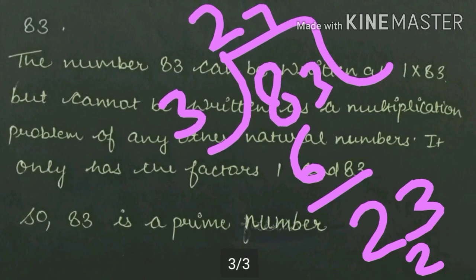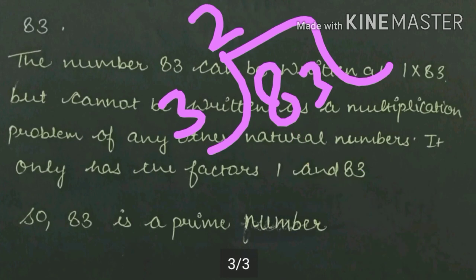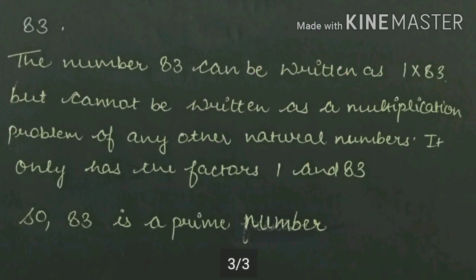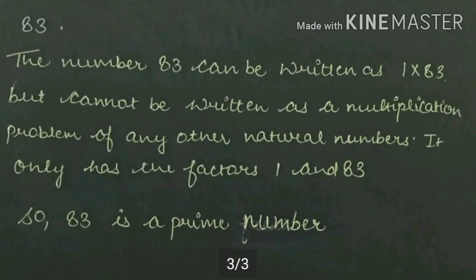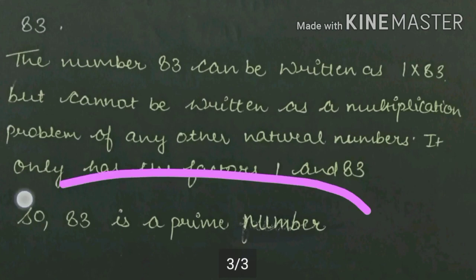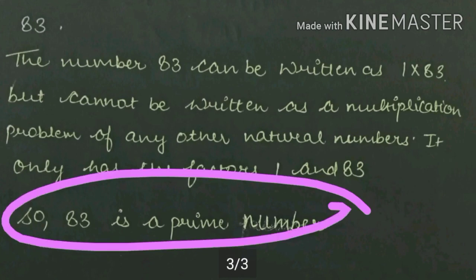3 is not a factor of 83. Factors are the numbers that divide evenly, so 83 is a prime number.